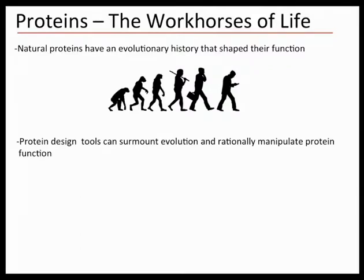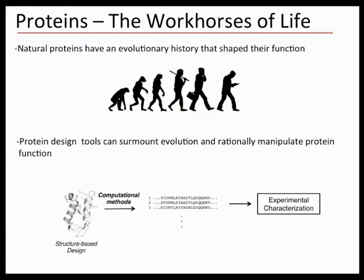But proteins do have an evolutionary history, which arises from different organisms and different conditions that shaped their structure and function. When we talk about protein design, the idea is to forget about this evolutionary history and make these proteins do what we want, rather than what they were evolved to do. In our lab, we like to use structures — protein structure is still the best surrogate for understanding protein function. What we do is use existing structures or make up our own, apply computational methods, generate novel sequences, and then characterize them experimentally.